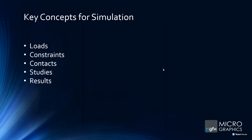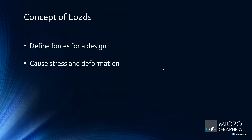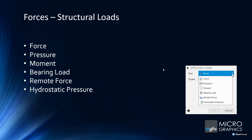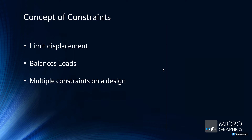Key concepts for simulation: firstly, you apply loads — you define a force for the design that causes stress and deformation. Types of structural loads include force, pressure, moment, bearing load, remote force, or hydrostatic pressure. Then you need constraints, which limit displacement and balance the load. For example, if you have a rotational force on a shaft, you need to anchor the shaft, otherwise it will move and you won't get your reactionary forces.